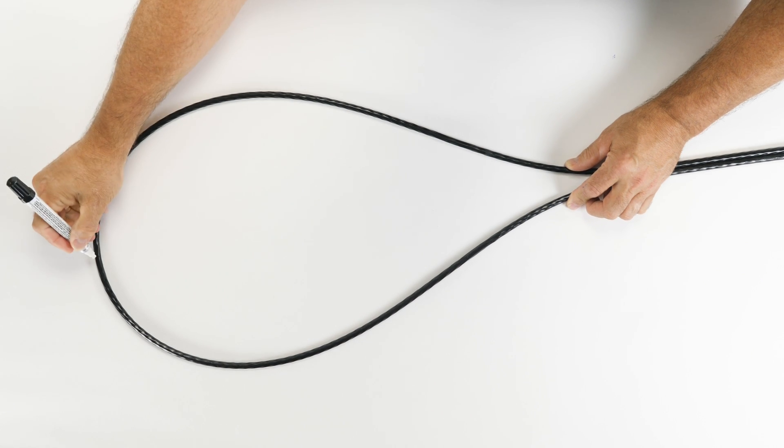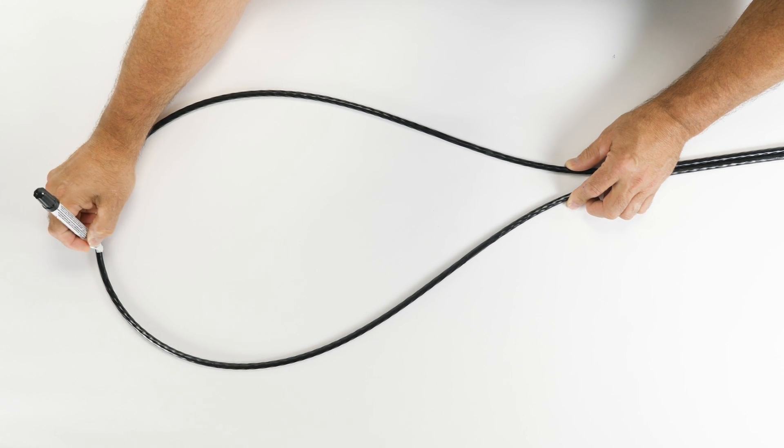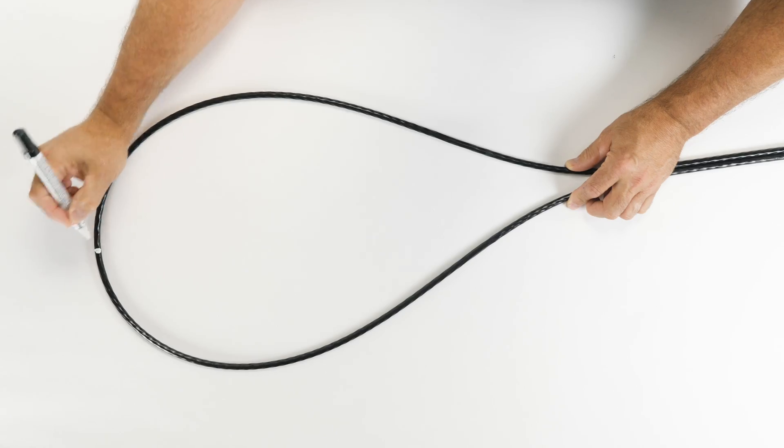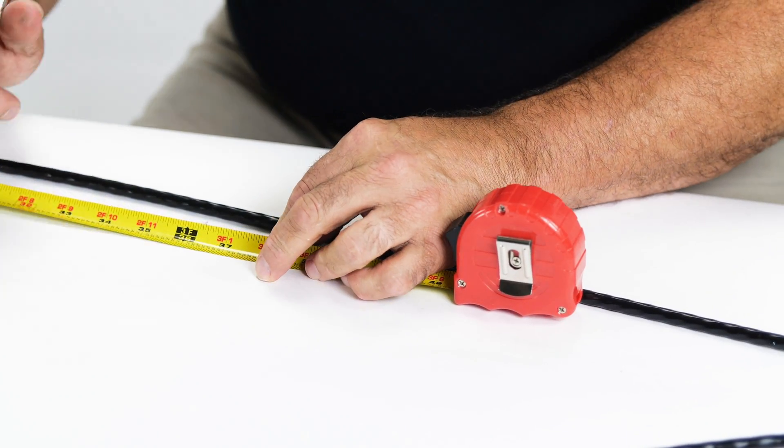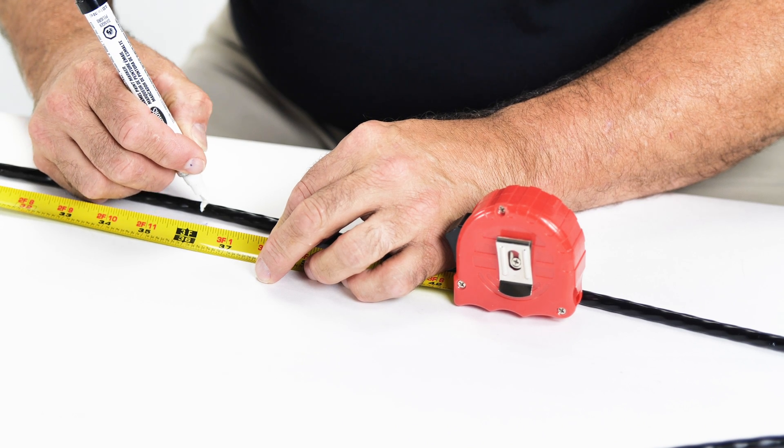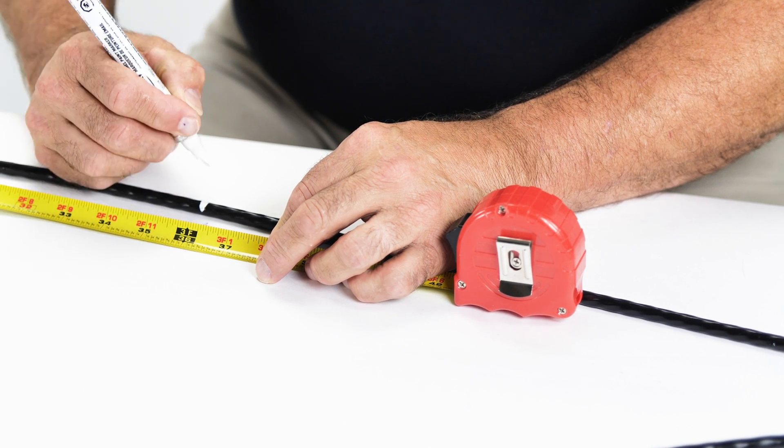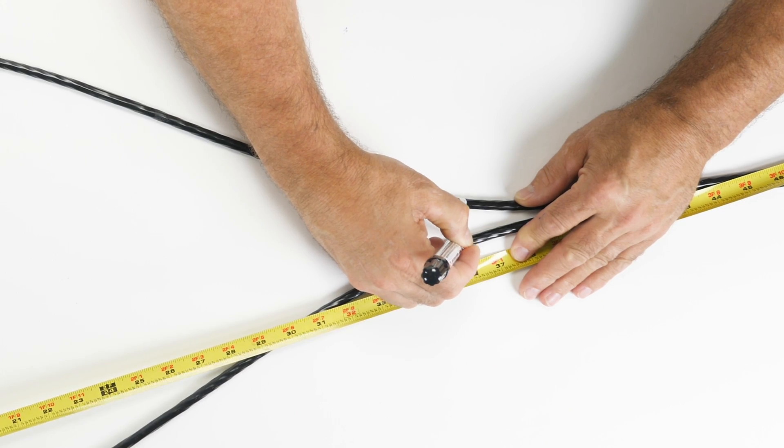Mark the center of the loop with the paint marker. From the center mark, measure out 36 inches on each side of the cable jacket. Place two additional identification marks on the jacket surface at the measured locations.